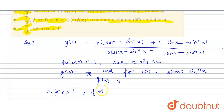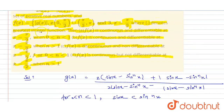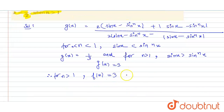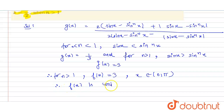For n greater than 1, f(x) equals [g(x)] = [3] = 3, for x belonging to [0, π]. Therefore f(x) is continuous and differentiable at x = π/2.